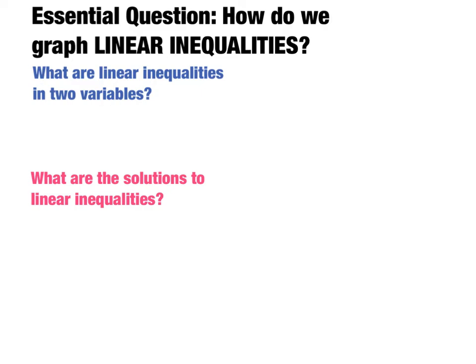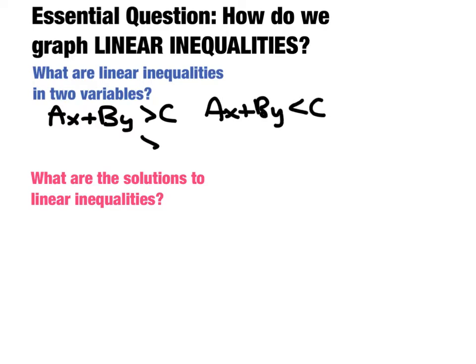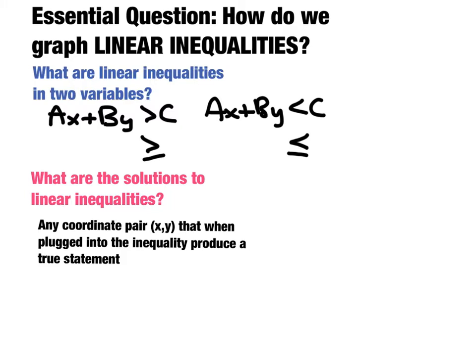In this lesson we're going to answer the question: how do we graph linear inequalities — specifically linear inequalities in two variables? That can look like AX plus BY is greater than C, or AX plus BY is less than C, and of course these could be greater than or equal to, or less than or equal to as well. The solutions are any coordinate pair XY that, when plugged into the inequality, produce a true statement.